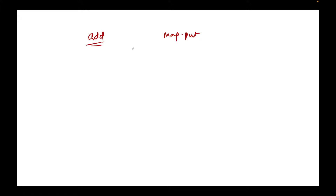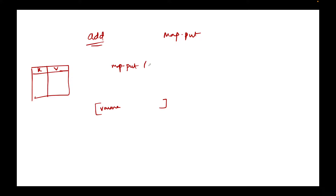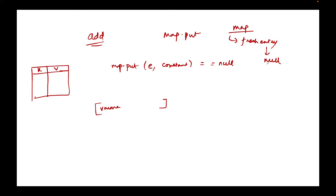Let's break down what is happening in the add method and in map.put. When I first try to add Varsha into the set, the condition is map.put equal to null. In a map, when a mapping doesn't exist — meaning a fresh entry is added — the map.put method returns null because the key doesn't exist yet. So in the first instance when I add employee Varsha, map.put equals null will be true, so the add method returns true and Varsha is added into the set with the value equal to the constant PRESENT.